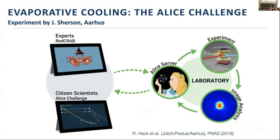One first example of a process we can optimize over the cloud is cooling of atoms. When you want to make a register with atoms in an optical lattice, you need a Bose-Einstein condensate. We used an interface created by Jacob Sherson in Aarhus for gamifying quantum experiments — a citizen-scientist experiment where they put together a magneto-optical trap, modulating its depth and frequency to create a Bose-Einstein condensate, and real people could connect and play with the pulse shapes, getting a score corresponding to the number of atoms entering the condensate.